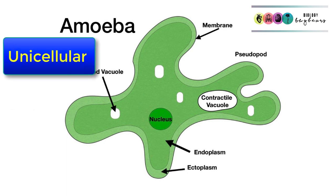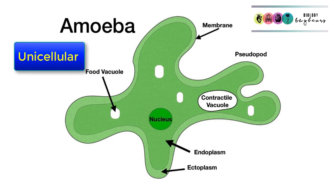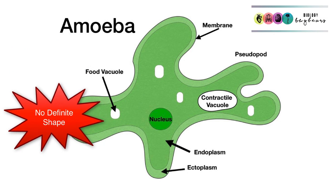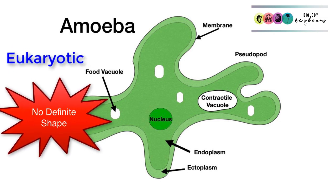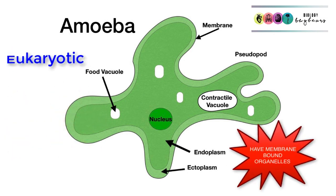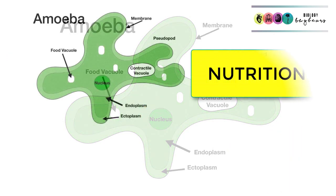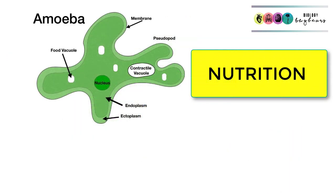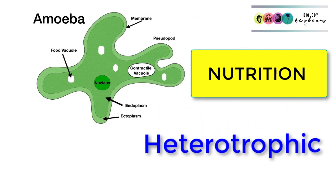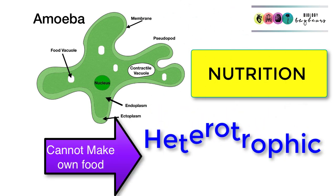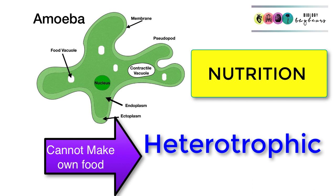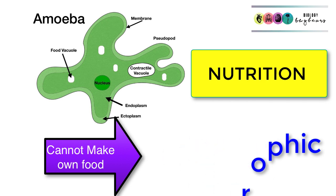Amoeba are unicellular little creatures with a very specific structure. The key feature is that they are eukaryotic organisms, so they do have membrane-bound organelles and they do have a nucleus. The way in which they obtain and use their food — their mode of nutrition — is that they are heterotrophs or heterotrophic. They cannot make their own food.